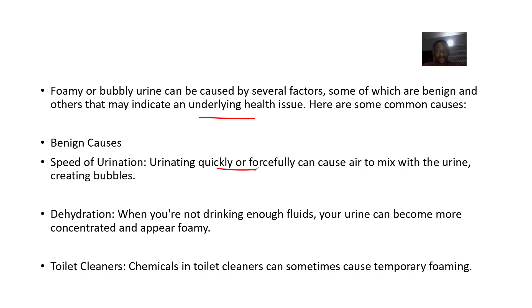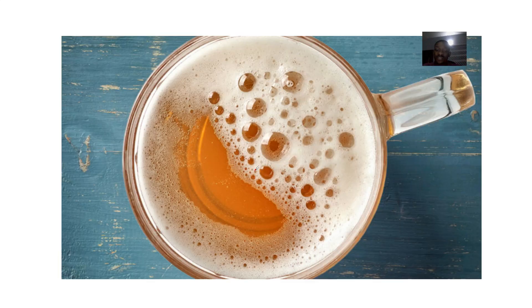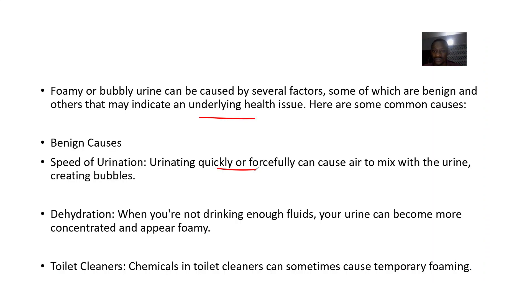If it is proteinuria, the urine will be bubbly and will kind of be milk-colored. Dehydration is another cause — when you're not drinking enough fluids, you urinate concentrated urine, which can be foamy. Toilet cleaners are also a factor: chemicals in your toilet can be what's making your urine appear foamy, not necessarily the constituents of your urine itself, because sometimes you urinate dilute urine but it's foamy due to the toilet cleaner you used.